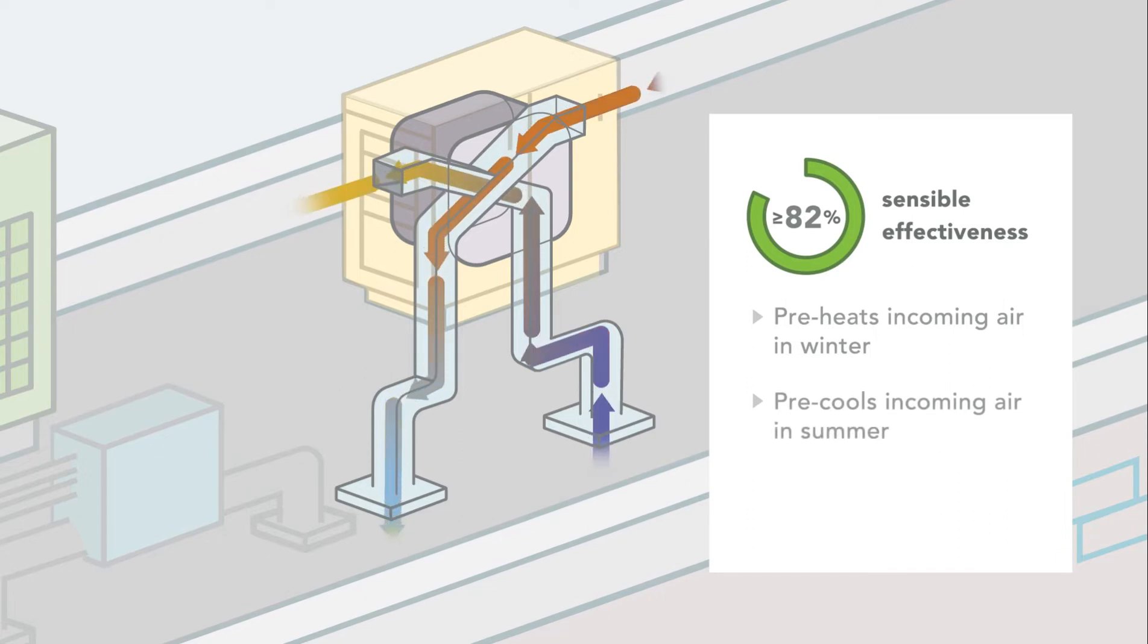In the summer, it precools the incoming air by rejecting heat to the outgoing exhaust air. This process significantly reduces the need for wasteful post-conditioning of ventilation air.